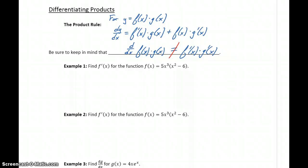So let's look at an example of that. In our first example, we want to take the derivative of 5x cubed times the quantity x squared minus 6. Our first function in this case is 5x cubed, and our second function is x squared minus 6.